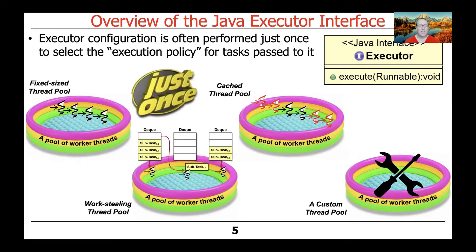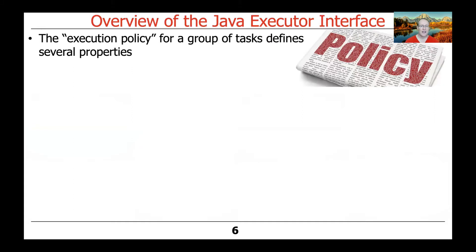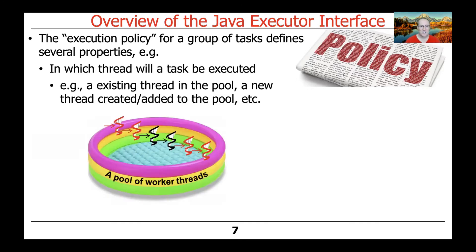The configuration of an executor is typically performed once by selecting something known as the execution policy for the tasks that are going to be passed into it. This is typically a one-shot thing you get to do. Let's talk about what the different execution policies are for the Java executor thread pool implementations and the considerations you have to think about when selecting one.